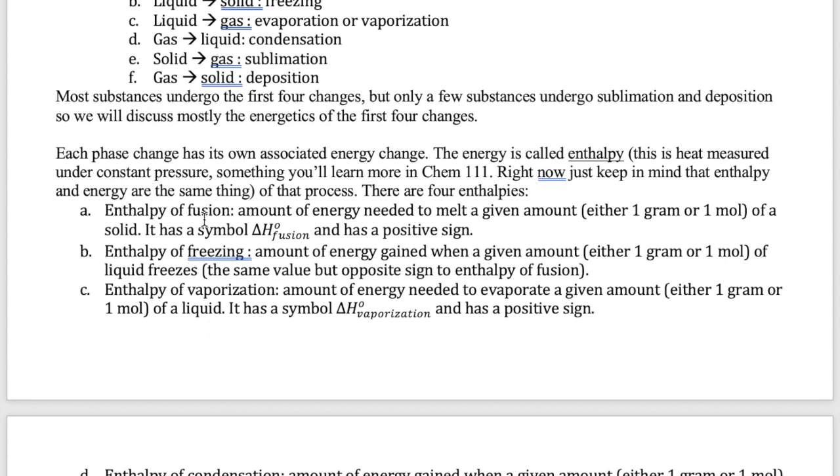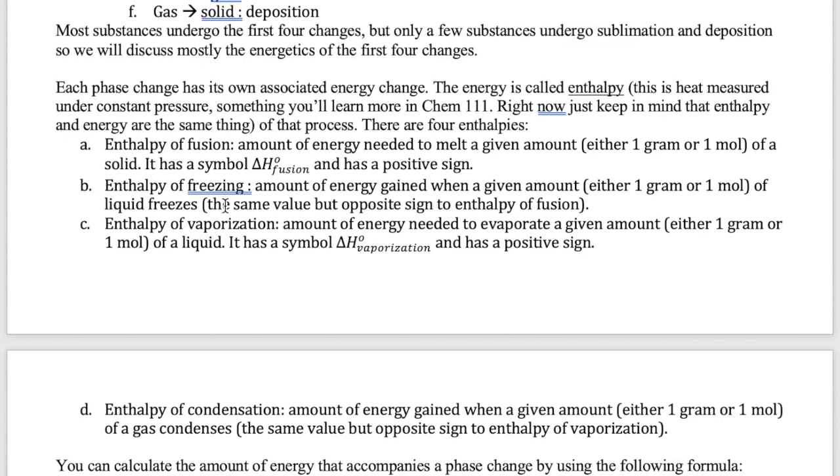We have the enthalpy of fusion, which refers to the heat needed to melt solid to liquid. The word fusion is used because when a solid melts, the separate pieces fuse together to form a liquid. The enthalpy of fusion also has a positive sign because the process is endothermic. The other two phase change enthalpies are enthalpy of freezing and enthalpy of condensation. The values of these enthalpies are the same as the enthalpy of fusion and vaporization respectively, except that both of these have negative signs in front of them because these processes are exothermic.